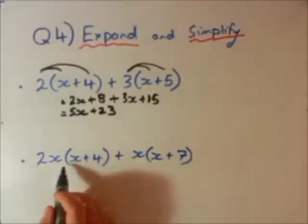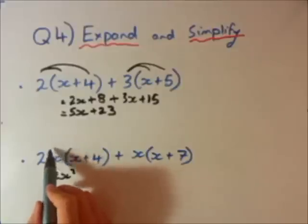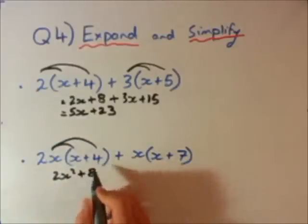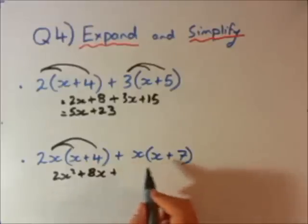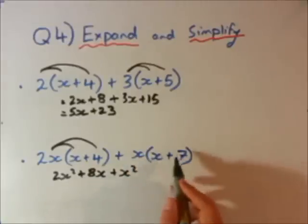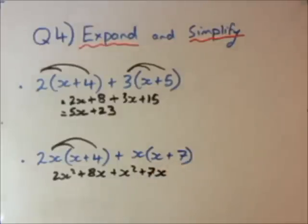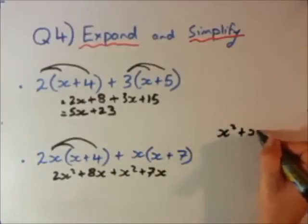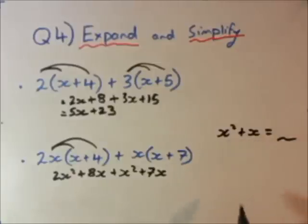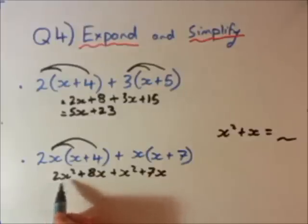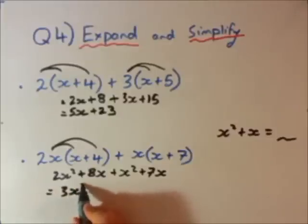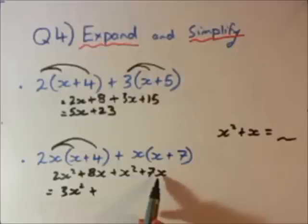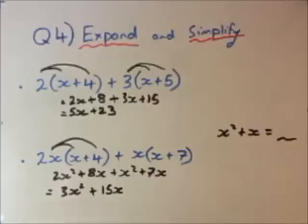Question 2 now, 2x times x is 2x squared, and then 2x by 4 is 8x, plus x times x is x squared, x times 7 is 7x. Now we need to simplify like terms. The first lot of like terms is the x squareds. x squared and x isn't a like term, you can't add those two together. So we have 2 here and 1 here, so it's going to be 3x squared, plus we have 8x plus 7x, 15x.